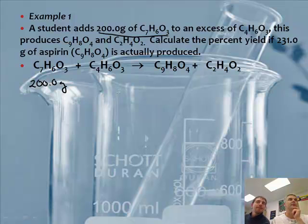All right. And well, I have 231 grams of aspirin. That's the C9 problem. Yeah. So this is 231.0 grams of this. That's how much is actually produced. So what's the percent yield?